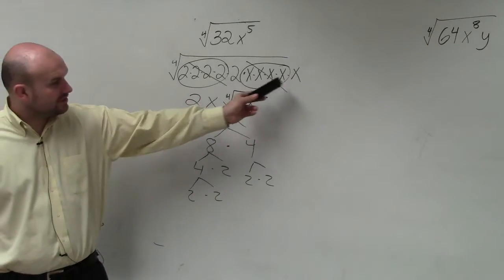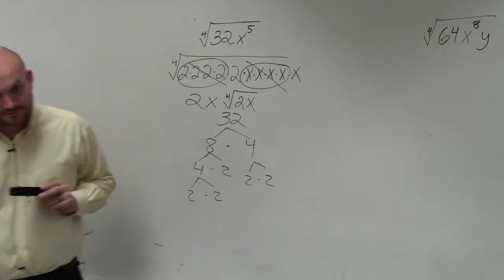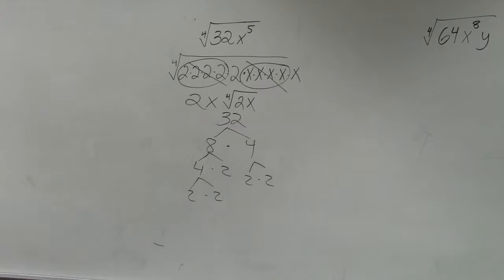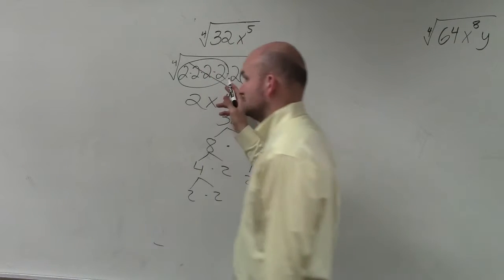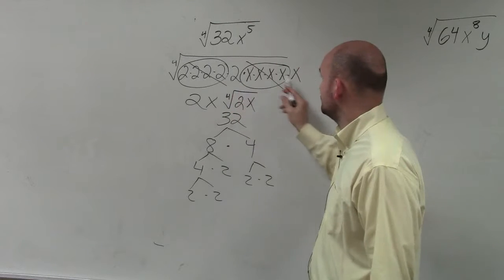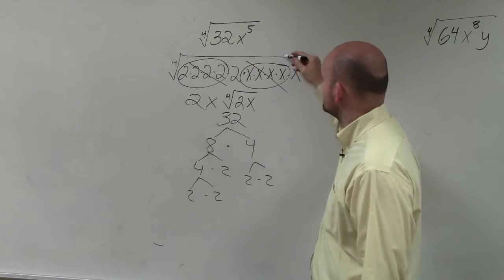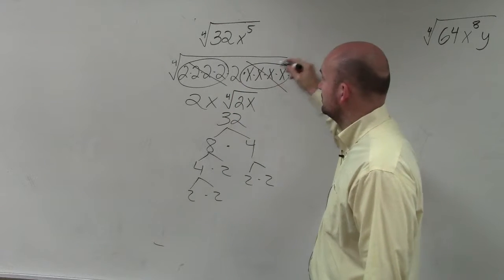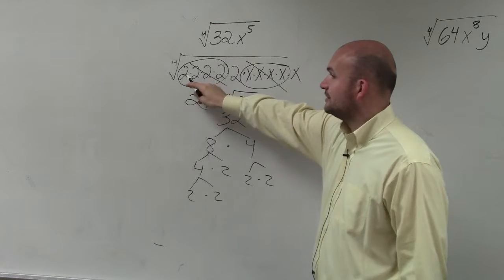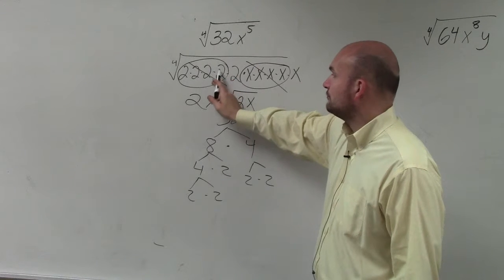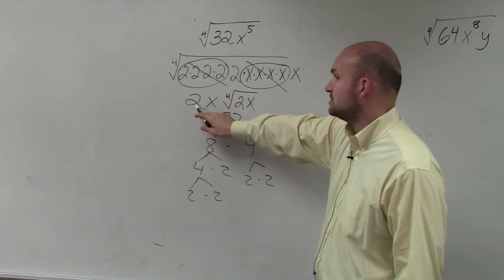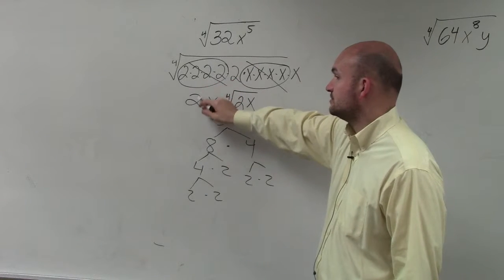You'd only have a two left over and an x. That's all that's left over — 2 and the x, and they're all still under the radical. I can take the fourth root of 4 times 4 times 4. The fourth root of 4 times 4 times 4 is 2 times 2 times 2.